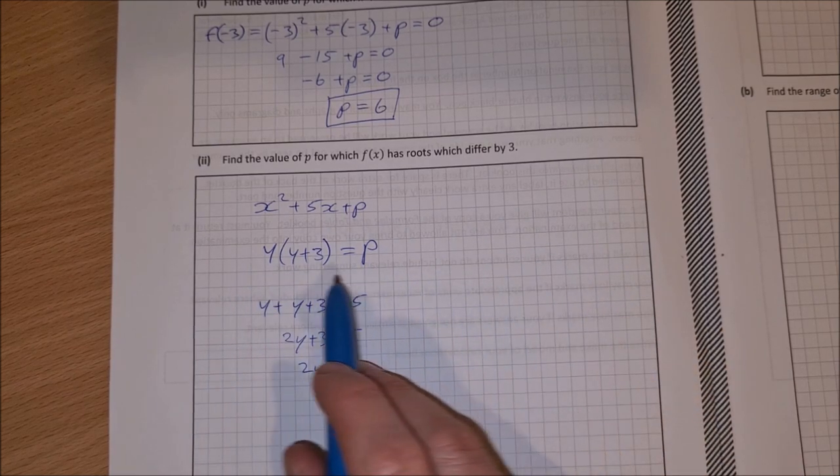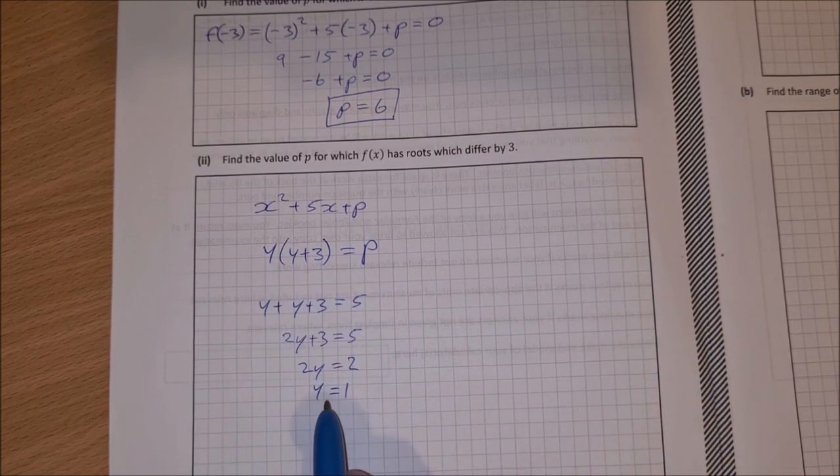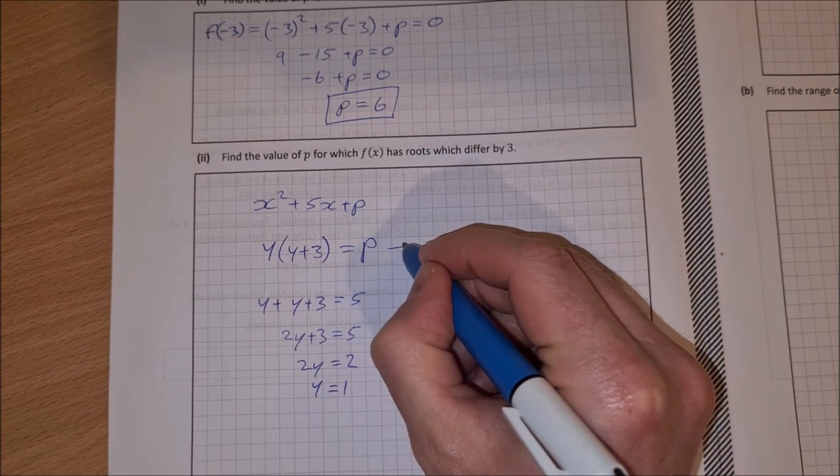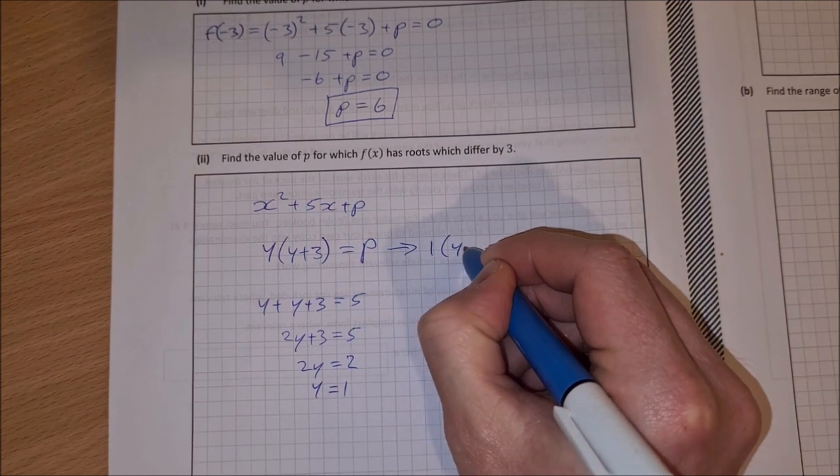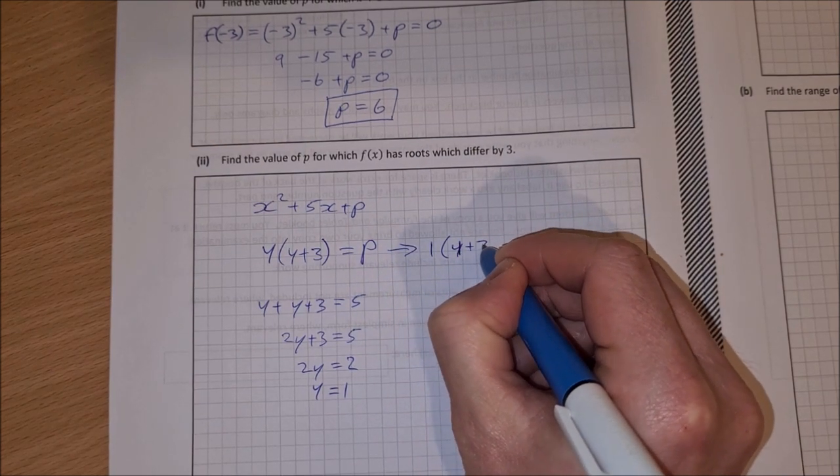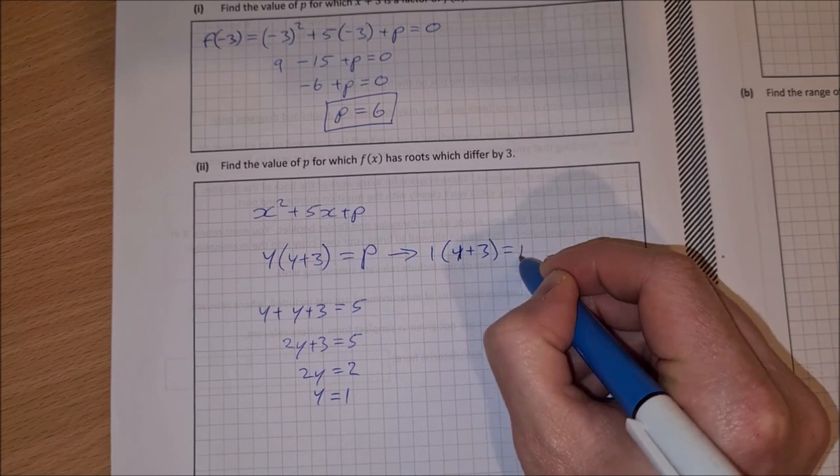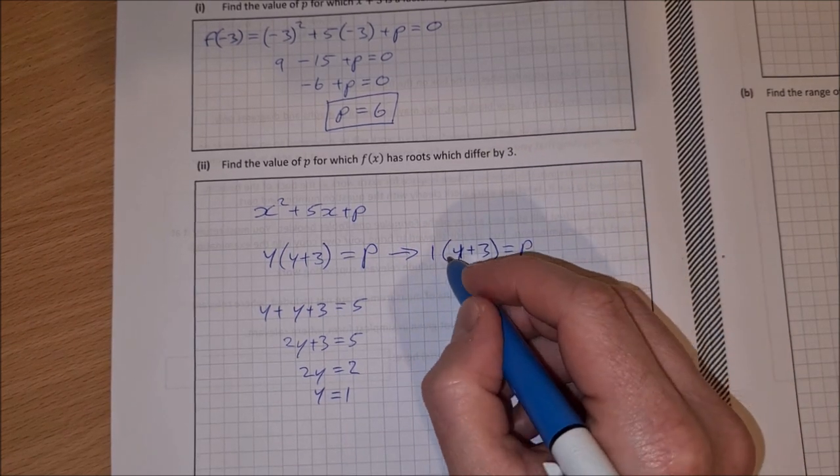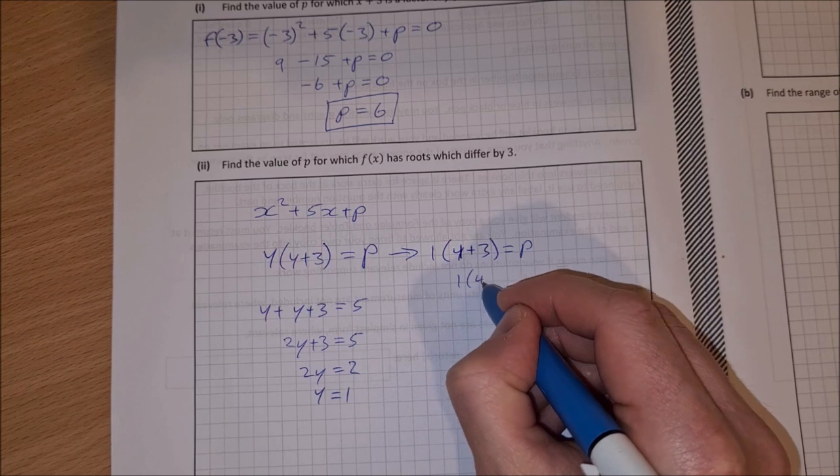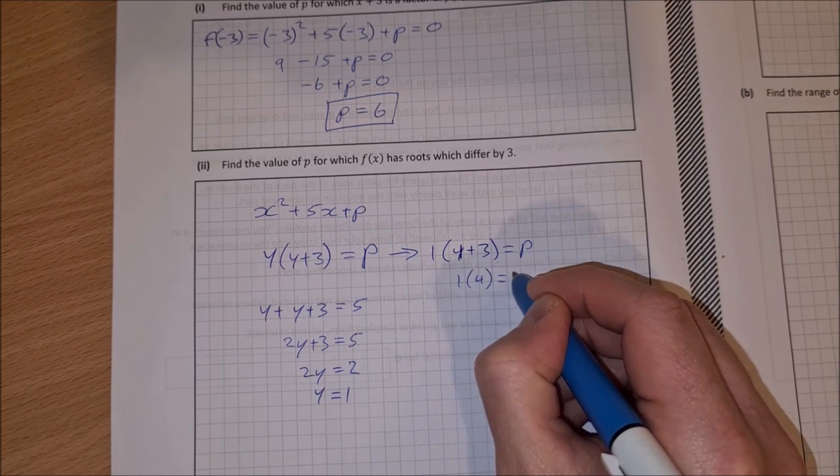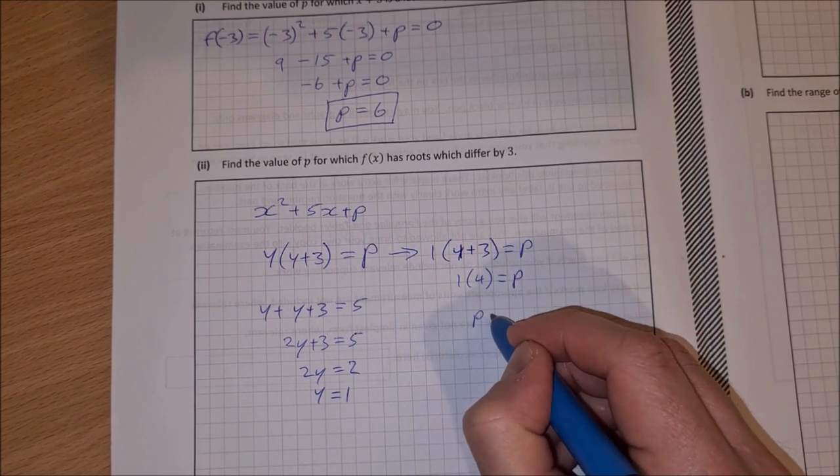What I can do then is I can sub this 1 back in here. I can say 1 by 1 plus 3 is equal to p. So that means 1 times 4 is equal to p, and that means p is equal to 4.